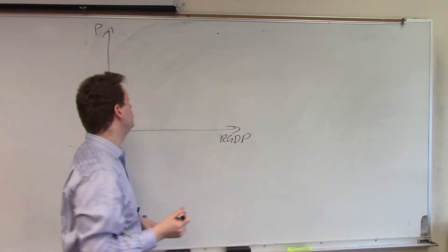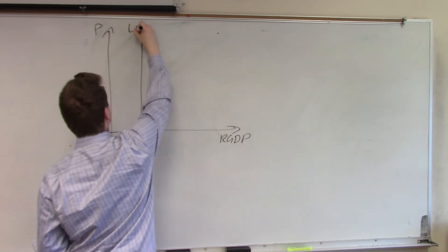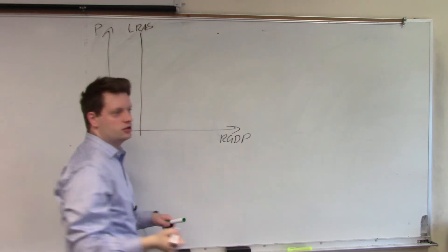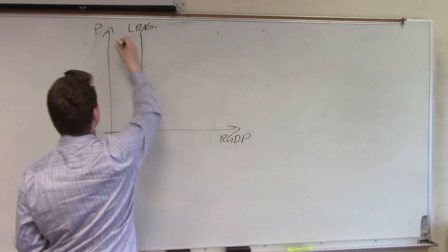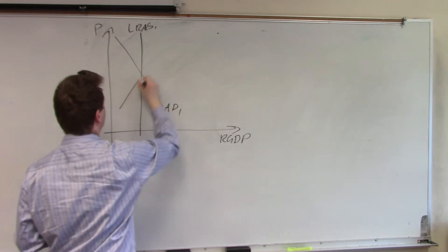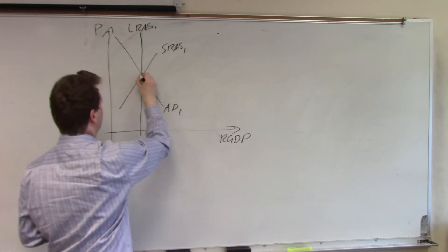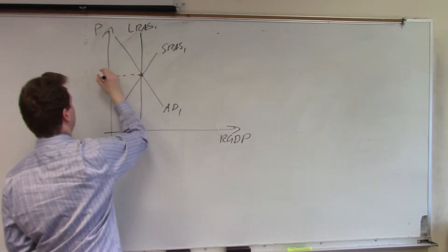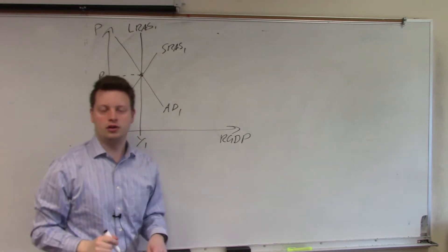Let's now assume we have a first year. We have our long-run aggregate supply curve here and this is for the first year. Then we have an aggregate demand and short-run aggregate supply and we have an equilibrium price level and output level in the first period.